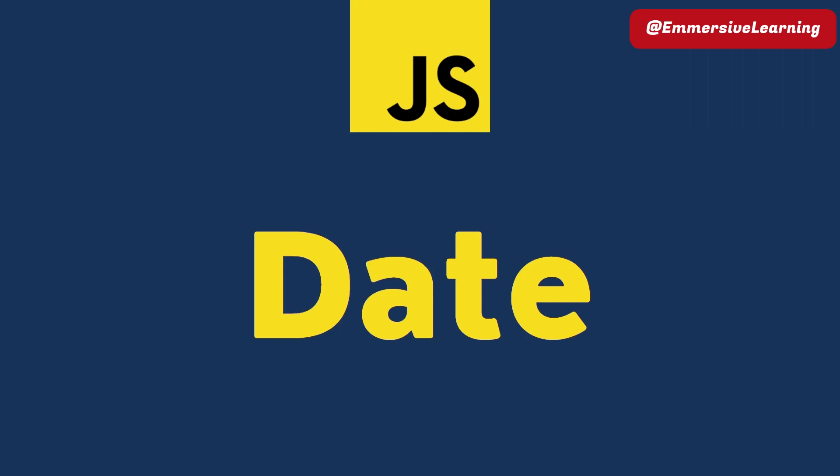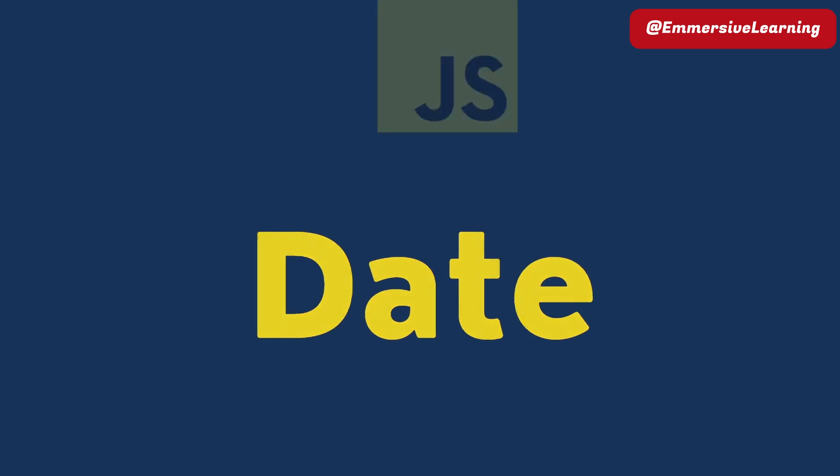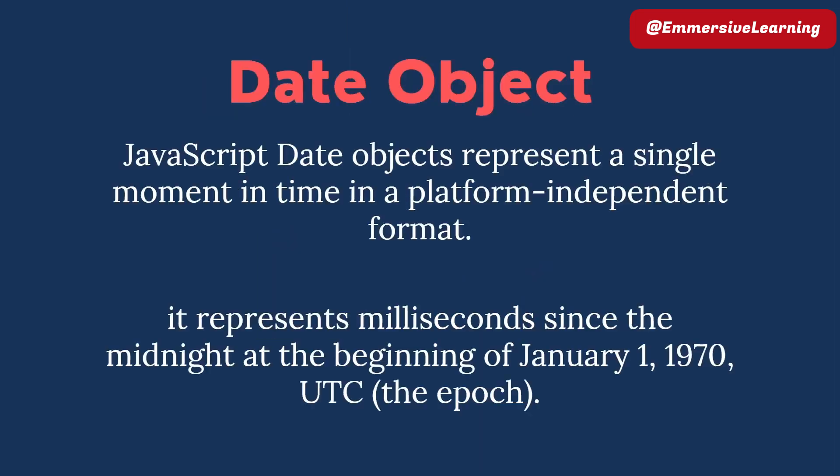We are learning about class. The date object is learning about JavaScript. We are learning about programming language. So in JavaScript, that object represents a single moment. It is a single moment — the moment is the same as a whole moment. So this moment is platform independent. Any JavaScript is a platform.